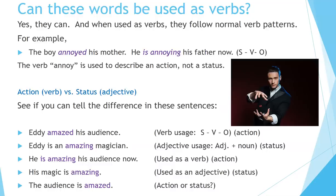See if you can tell the difference in these sentences. Eddie amazed his audience — this is verb usage: subject, verb, object; 'amazed' is an action. Eddie is an amazing magician — this is adjective usage: adjective plus noun, describing the magician. He is amazing his audience now — used as a verb; 'is amazing' is an action. His magic is amazing — used as an adjective, describing the status of the magic.